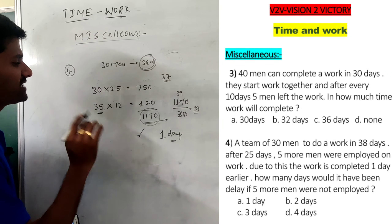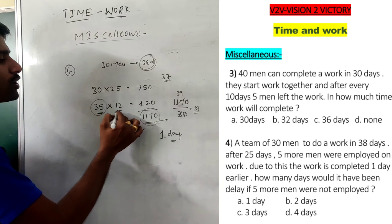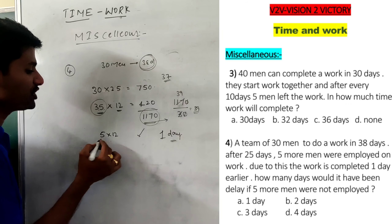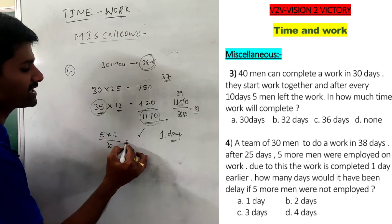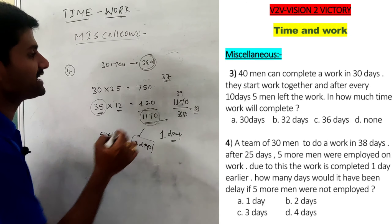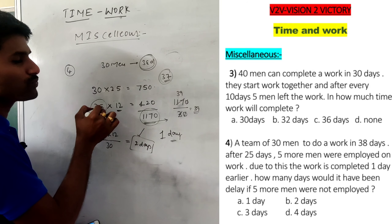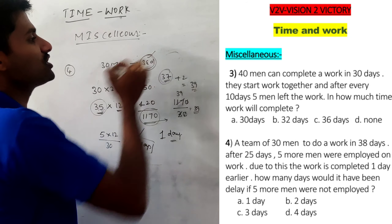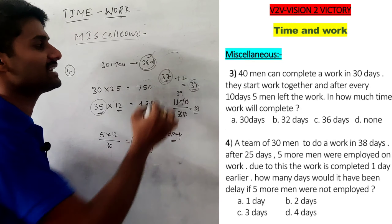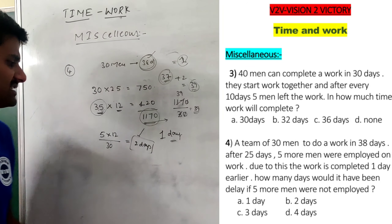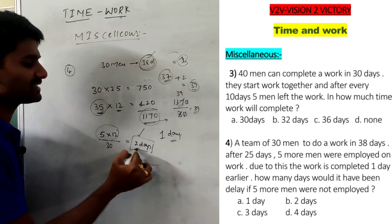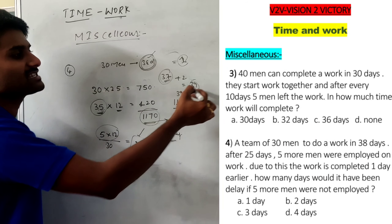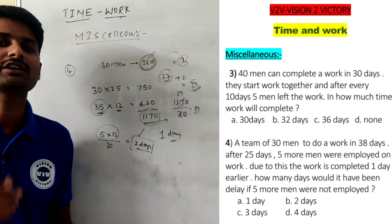Using the direct method: the 5 extra men worked for 12 days, completing 5×12 = 60 extra units. Those 60 units done by the original 30 men would take 60÷30 = 2 days. So without the extra men, work finishes in 37+2 = 39 days, but it was needed in 38 — confirming the work is delayed by 1 day.